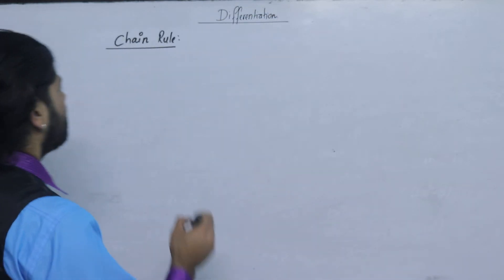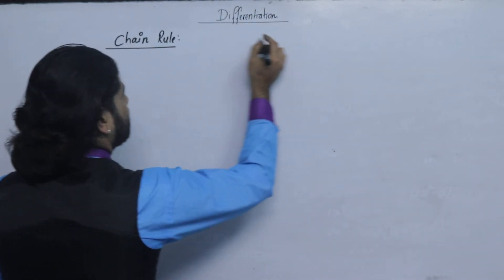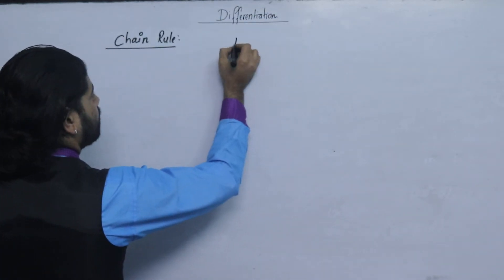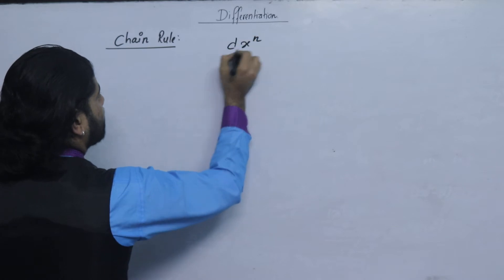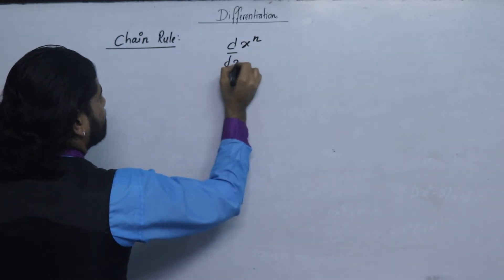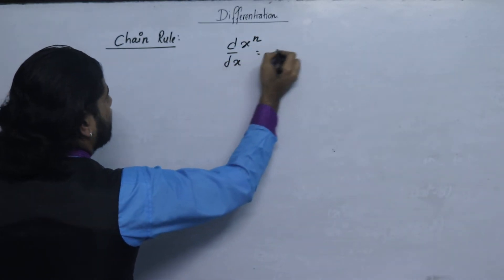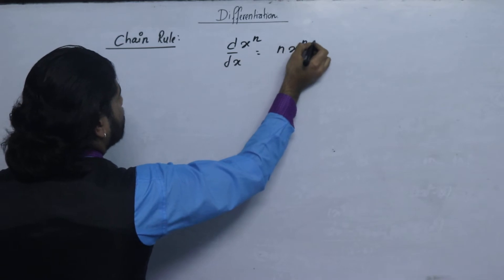Now, what is normal? In the previous class, we have the power rule. The differentiation of x to the power n with respect to x — that means x to the power n minus 1.